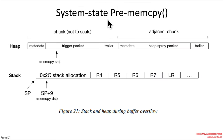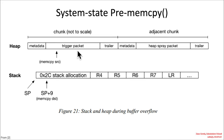Right before the memcopy, the source is the packet copied onto the heap: metadata, 0x2C bytes of data, trailer, and whatever attacker-controlled data is directly adjacent on the heap — hence the heap spray and grooming. The destination is a 0x2C allocation on the stack; the stack pointer points to the base of the allocation, but the actual memcopy destination is at stack pointer plus 9. The goal is that attacker-controlled data smashes the stack contents, ultimately overwriting the link register — the saved return address on an ARM system.